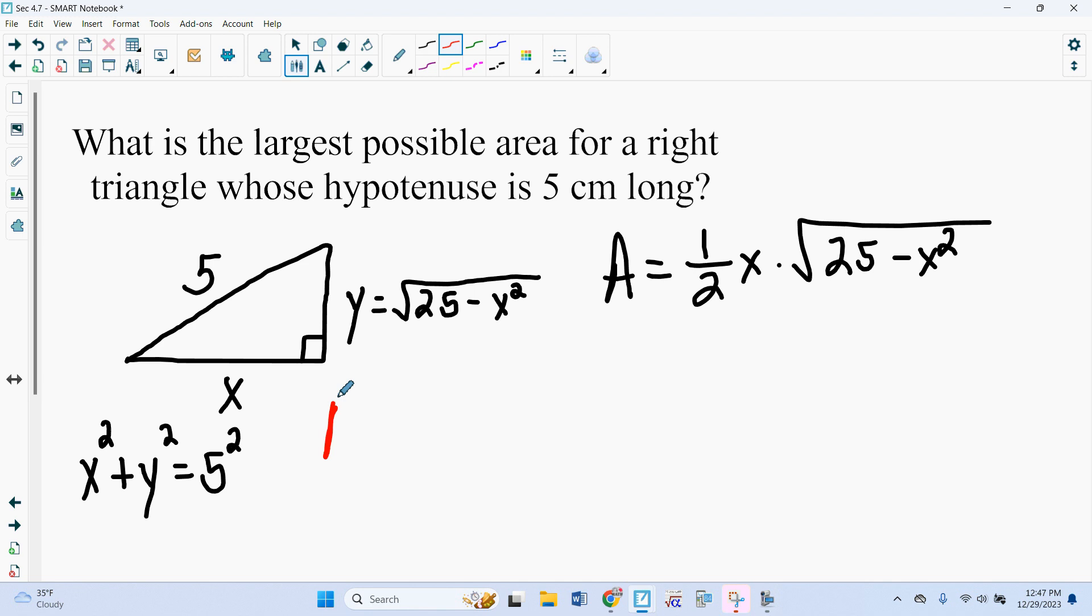Next, we need to find the derivative. So as we find the derivative, we've got to use product rule. The derivative of the first times the second plus the first times derivative of the second. And if we think of this as to the 1 half power, we would bring down the 1 half, subtract 1 times the derivative of the inside.